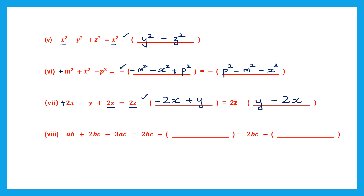Question 8. ab plus 2bc minus 3ac on the left hand side. 2bc has been taken, so we leave out 2bc and put the remaining terms inside the bracket. Check the sign — it is minus. So the sign of all other terms will change: plus ab becomes minus ab, and minus 3ac becomes plus 3ac. Rewriting with the positive sign first: 3ac comes first, then minus ab. So 3ac minus ab is the answer.